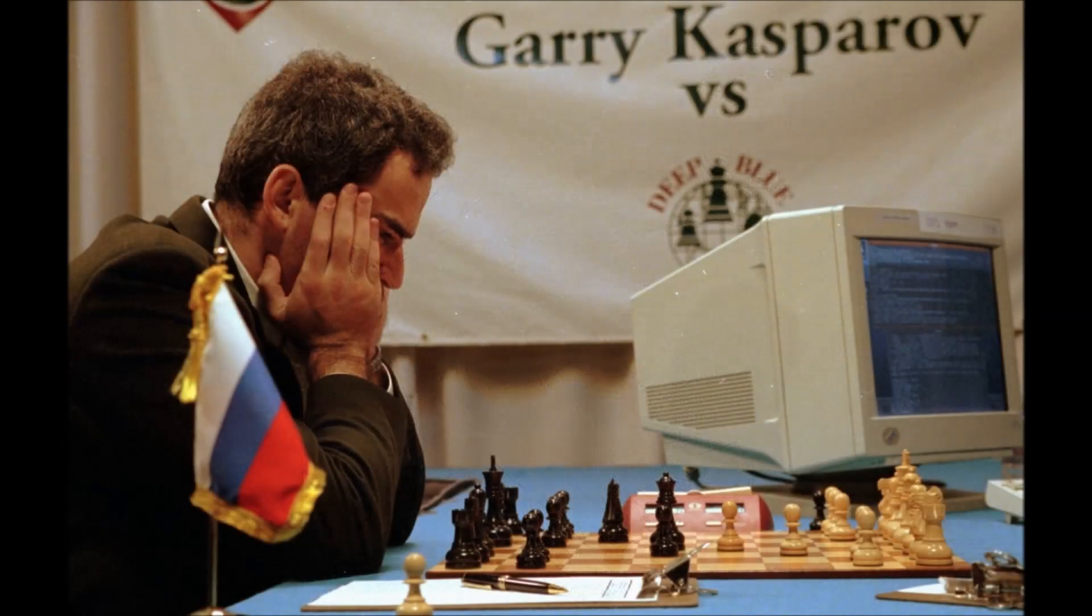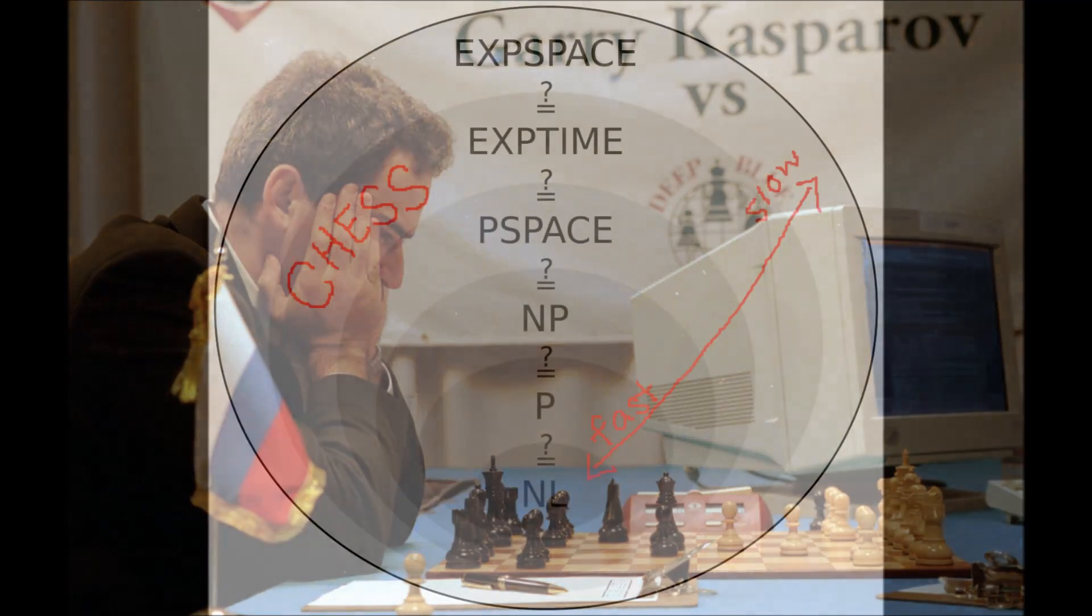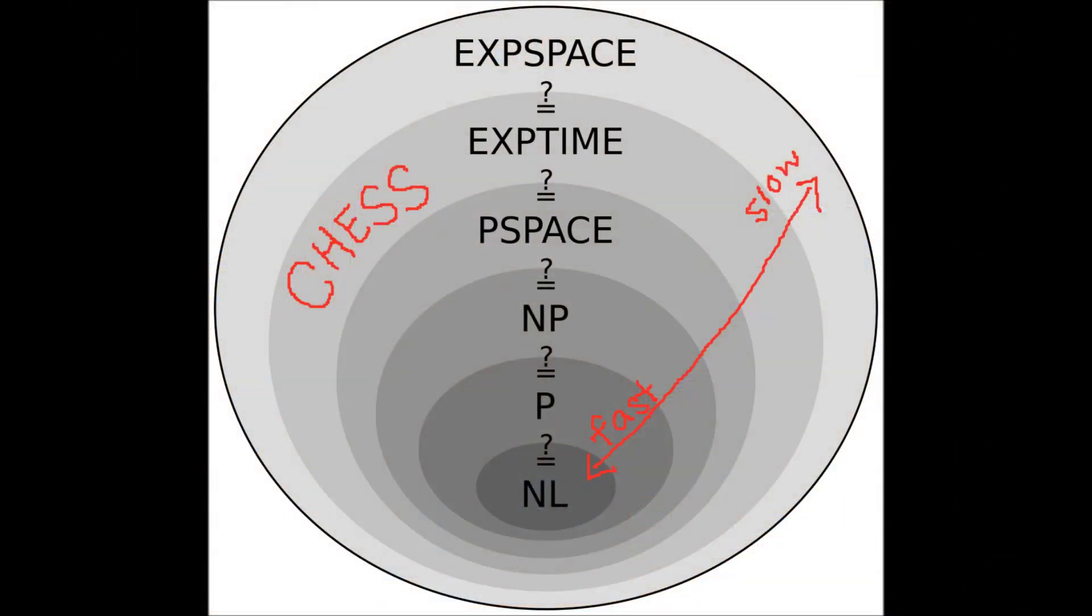IBM's Deep Blue defeated world chess champion Garry Kasparov in 1997, but there are still many games that computers cannot consistently beat humans at, partly because our best AI algorithms are still slow at searching through very large trees, or we have reason to believe they could be faster, but we haven't found that faster way yet.